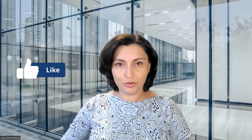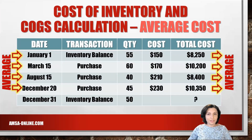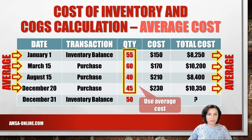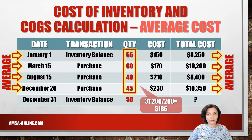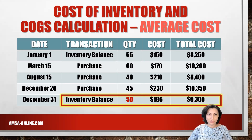Finally, we calculate inventory cost using the average cost method. Using this method, the costs of units sold and ending inventory are calculated based on the average of purchased costs — probably the easiest method to use. The average unit cost is calculated by dividing the cost of all goods available for sale ($37,200) by the total units available (200), giving an average unit cost of $186. Multiplying 50 units by $186 gives ending inventory of $9,300.